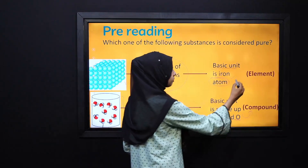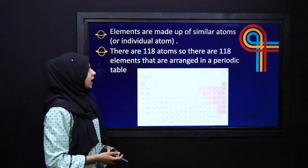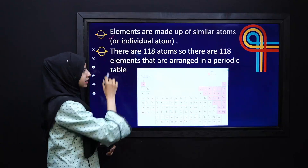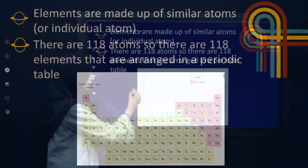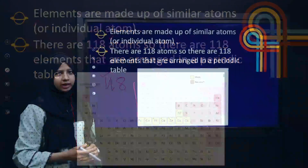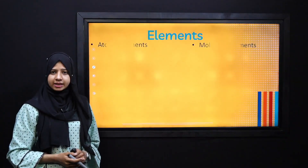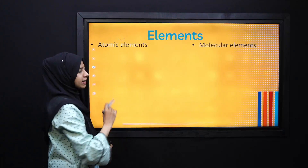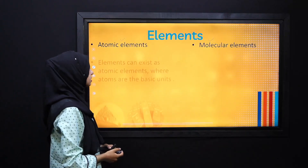But in today's lecture, we will discuss our first pure substance: elements. Elements are individual items, and in the periodic table we have 118 elements arranged in it. Further, we have two categories: the first one is the atomic element, and the second one is the molecular element.